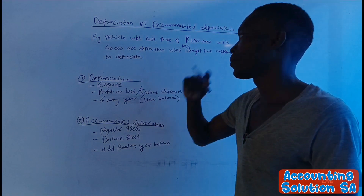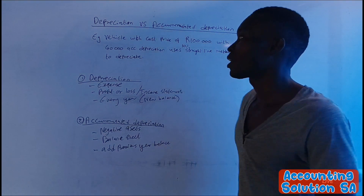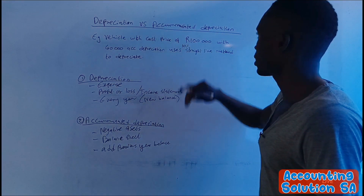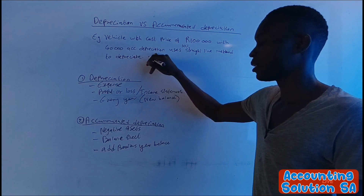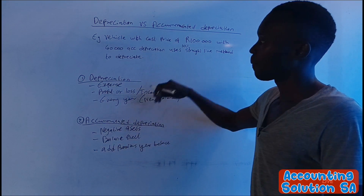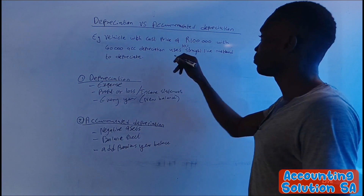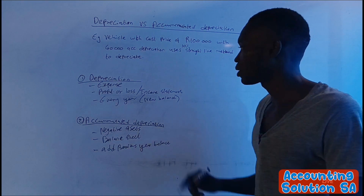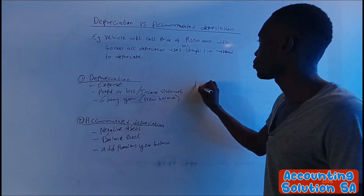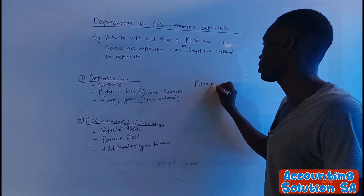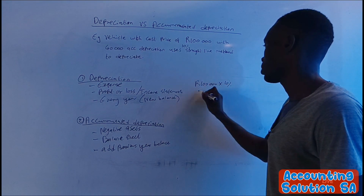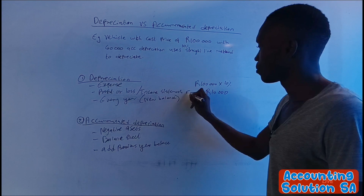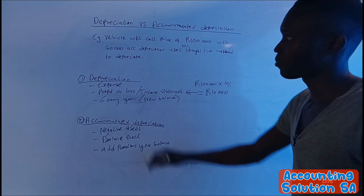Now let's apply this to our scenario. First, let's identify the depreciation. They give us 100,000 as the cost price, and 40,000 is the accumulated depreciation from the previous year. Using the 10% straight-line method, we calculate: 100,000 multiplied by 10% equals 10,000. That 10,000 is the depreciation for this year.